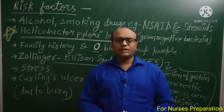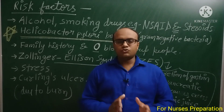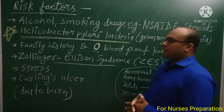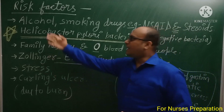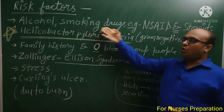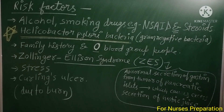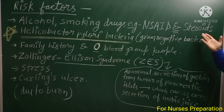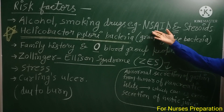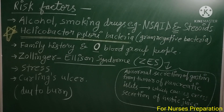अब बात करते हैं risk factors की। इस topic में ये part काफी important है, तो pay attention। Risk factors में: excessive consumption of alcohol, smoking, और कुछ drugs जैसे NSAIDs — non-steroidal anti-inflammatory drugs — और steroids। इनकी वजह से भी peptic ulcer हो सकता है। Peptic ulcer से बचाव के लिए NSAIDs और steroids को peptic ulcer patient को न दें।